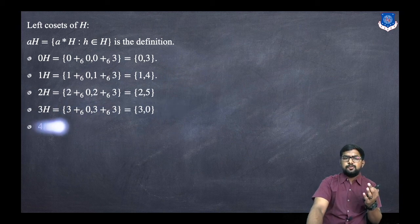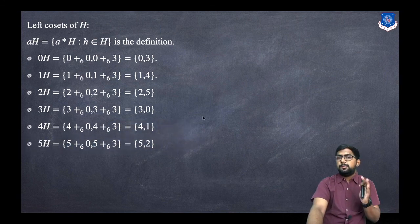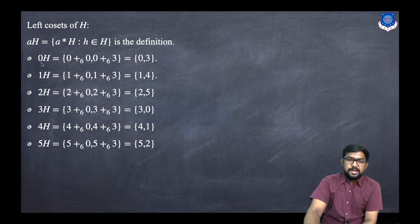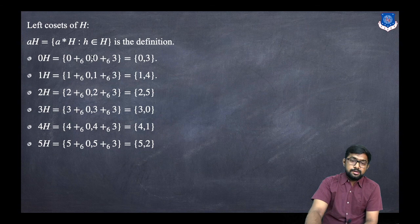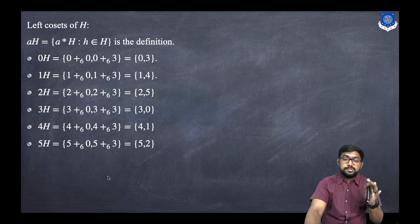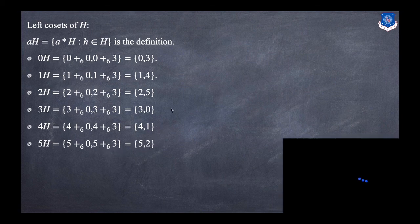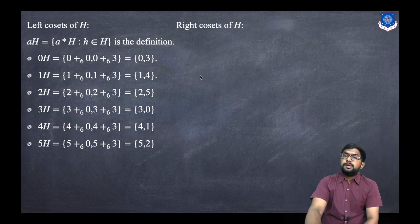In the same manner we list 1H, 2H, 3H, 4H, 5H. The pattern is: the left entry comes from 0,1,2,3,4,5 and the right entries come from the set {0, 3}. For example, 3+0 divided by 6 gives remainder 3, and 3+3 divided by 6 gives remainder 0. For 5+0 divided by 6, remainder is 5, and 5+3 gives 8; 8 divided by 6 gives remainder 2. This is how you calculate the left cosets.